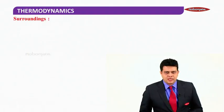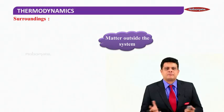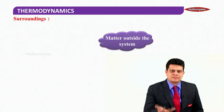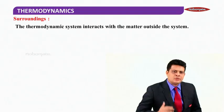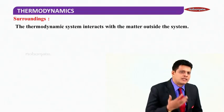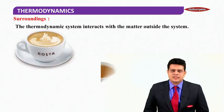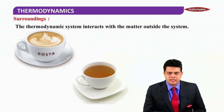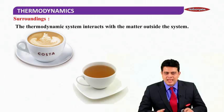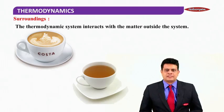What is surroundings? Anything other than the system in this universe becomes surroundings — matter outside the system. A thermodynamic system continuously interacts with the matter outside it, and that matter outside is called surroundings. For example, a delicious coffee or tea in a cup is a system, and it interacts with matter outside — that part which is outside the system we call surroundings.